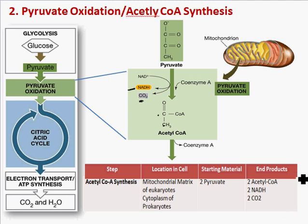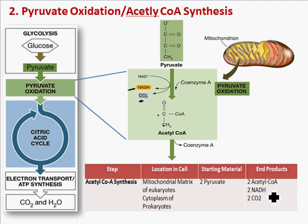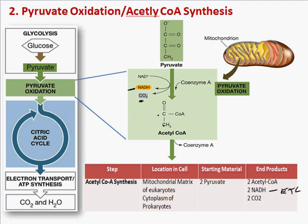Pyruvate oxidation occurs inside the mitochondria in eukaryotes and in the cytoplasm in prokaryotes. It produces two acetyl-CoAs, two NADHs — which will go to the electron transport chain — and two carbon dioxides. We ended with acetyl-CoA, so the citric acid cycle will start with acetyl-CoA.